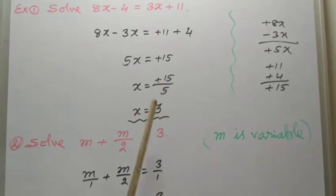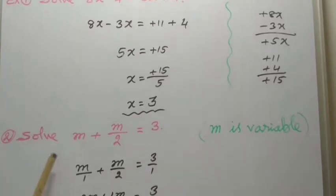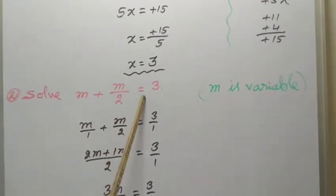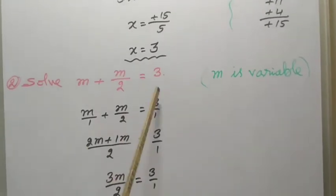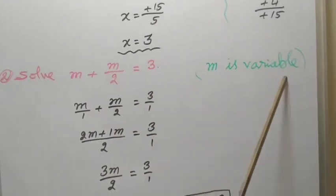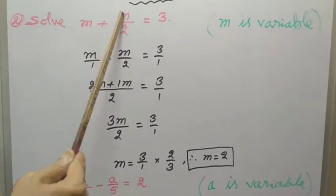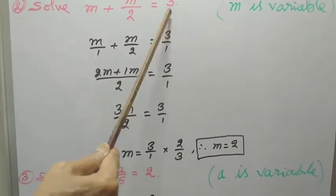In the same way, let us learn the second problem. Solve M plus M by 2 equal to 3. In this problem, M is variable.